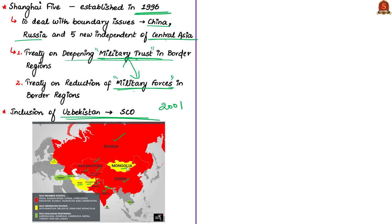The SCO's dialogue partners are Azerbaijan, Armenia, Cambodia, Nepal, Turkey and Sri Lanka. Of the five republics of Central Asia, one country not part of SCO is Turkmenistan. India was not a founding member — only in 2017 did India get complete membership of the SCO with the support of all member countries. Prior to that, India was acting as an observer state.